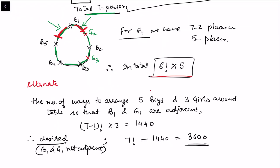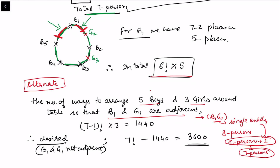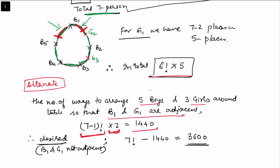An alternate method: count arrangements where b1 and g1 are adjacent, then subtract. Treating b1 and g1 as a single entity leaves 7 objects total, arrangeable in 7 minus 1 factorial ways. Since b1 and g1 can permute among each other, multiply by 2, giving 6 factorial times 2, which equals 1440. The total arrangements of 8 people are 7 factorial. Subtracting gives 7 factorial minus 1440 equals 3600, the same answer as before.